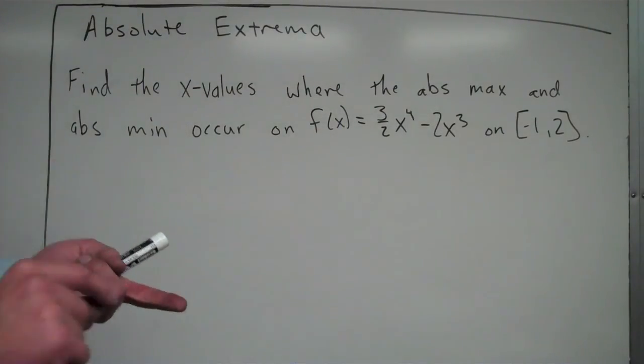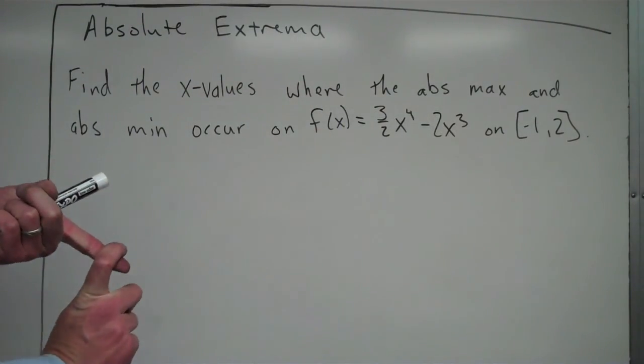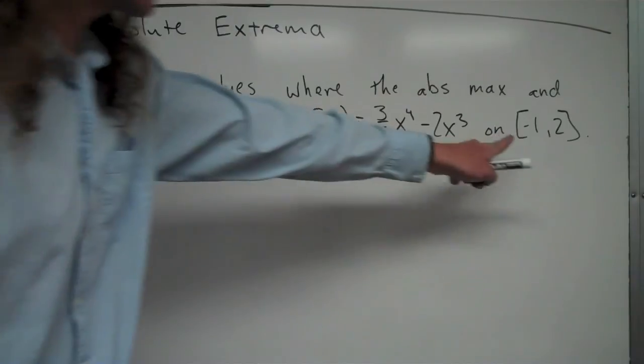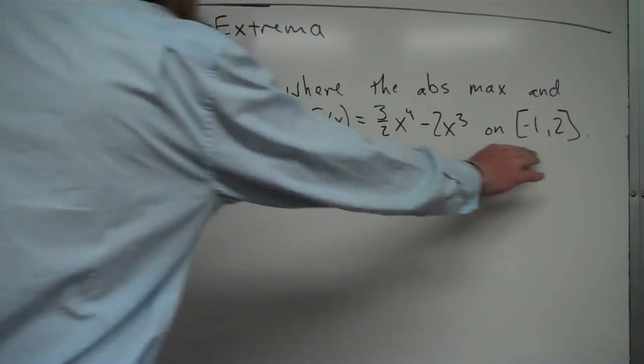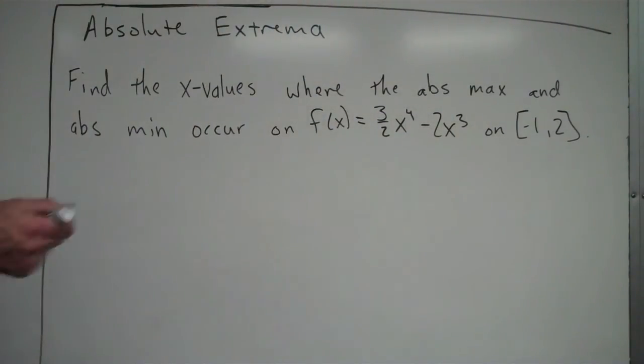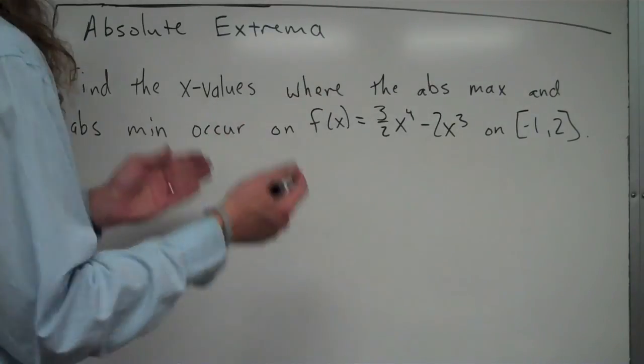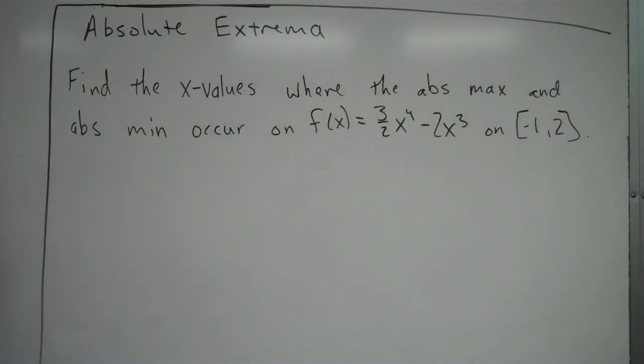Absolute extrema can either occur at the endpoints, which in this case are -1 or 2, so we have to keep those possibilities in mind, or where the derivative is equal to 0 or undefined. We already know what the endpoints are, but right now we have to figure out where the derivative equals 0 or is undefined.